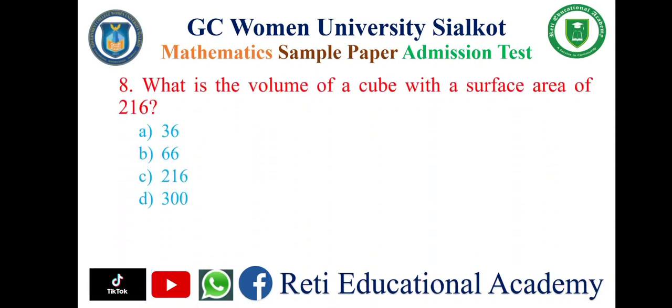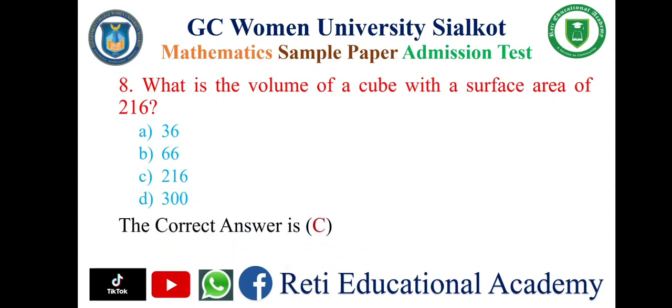Question number eight: What is the volume of a cube with a surface area of 216? A: 36, B: 66, C: 216, D: 300. And the correct answer is C: 216.